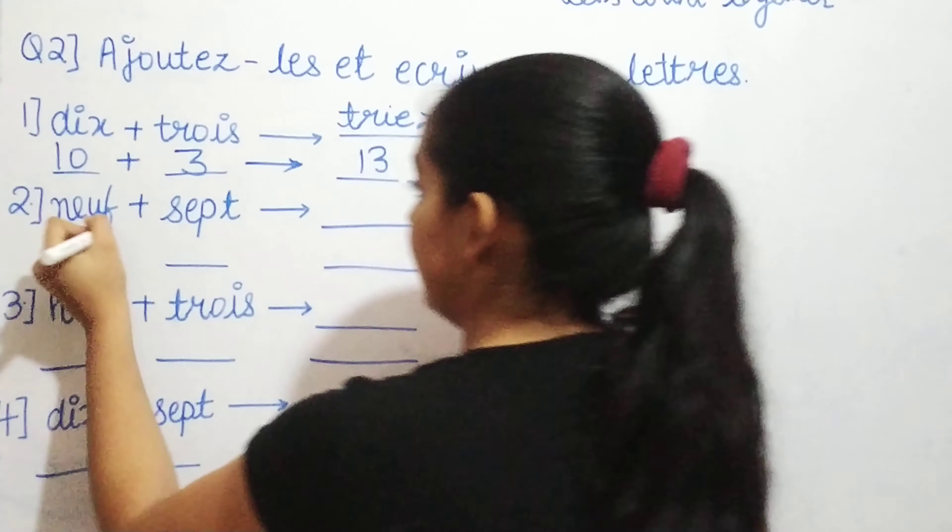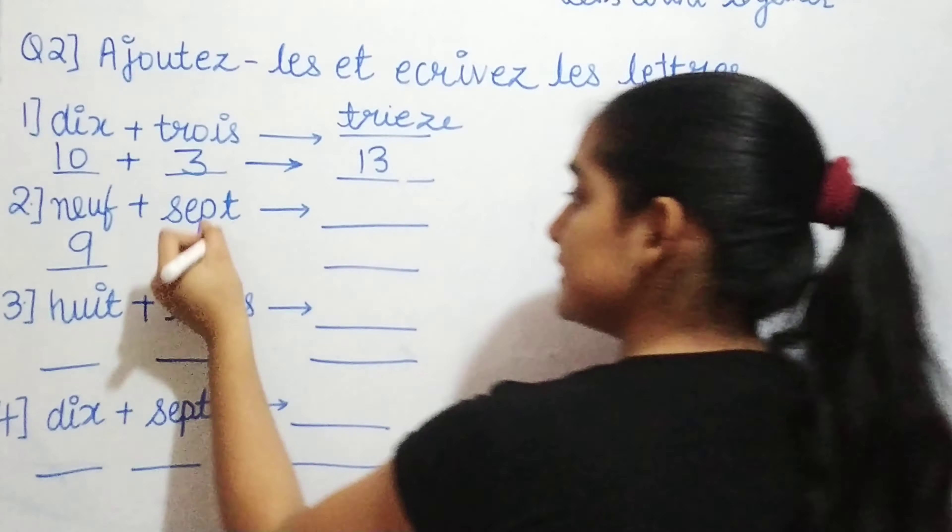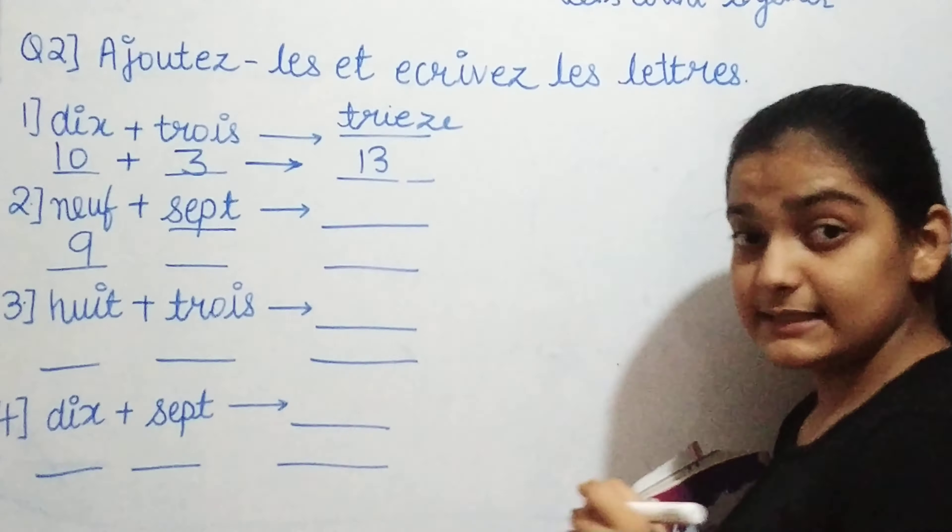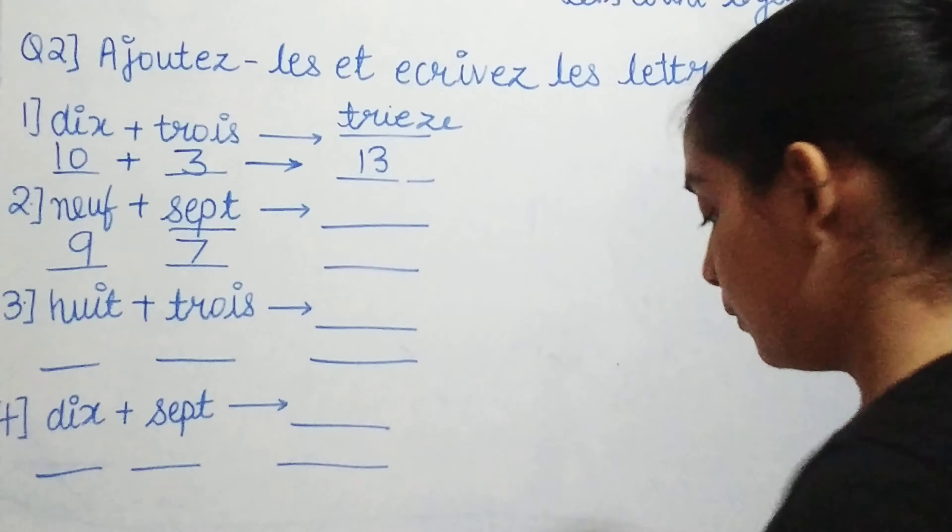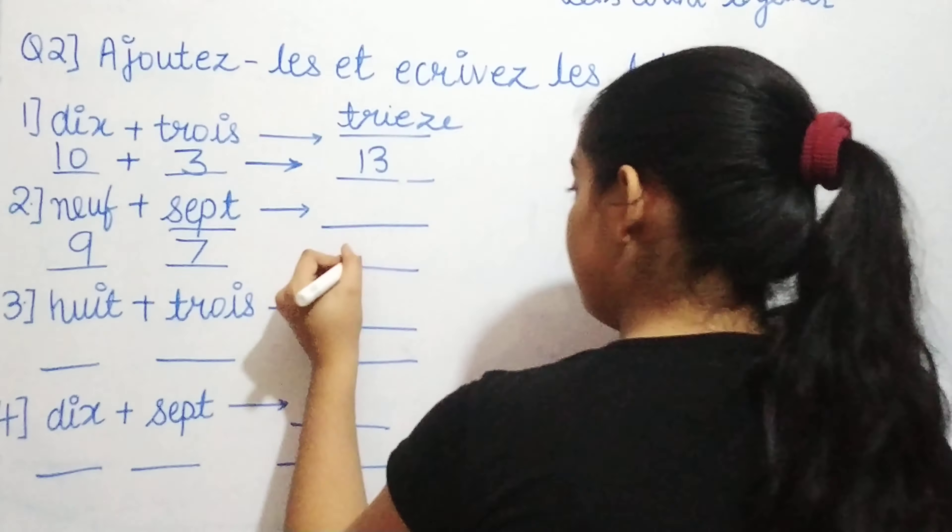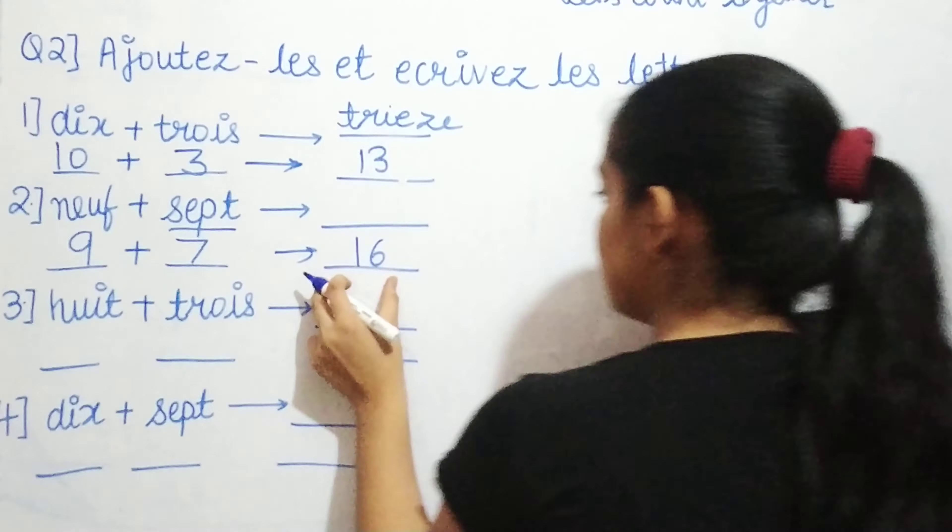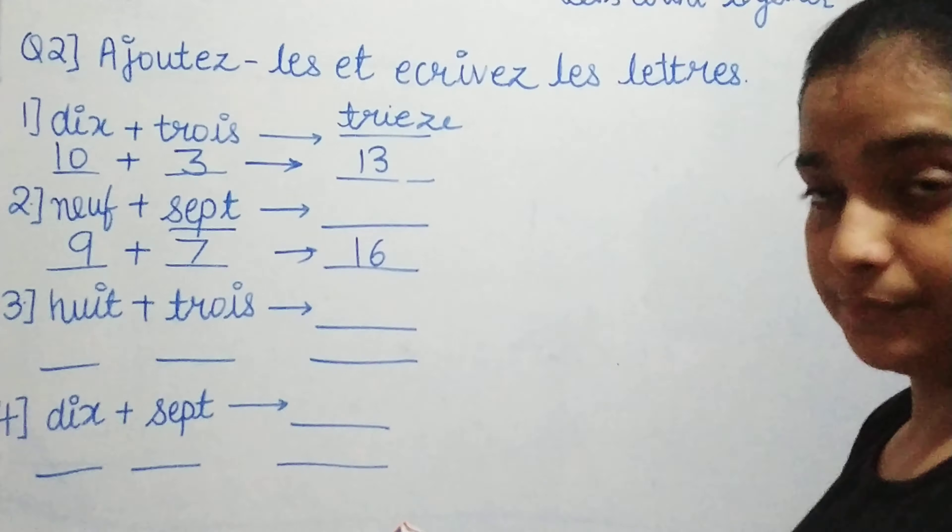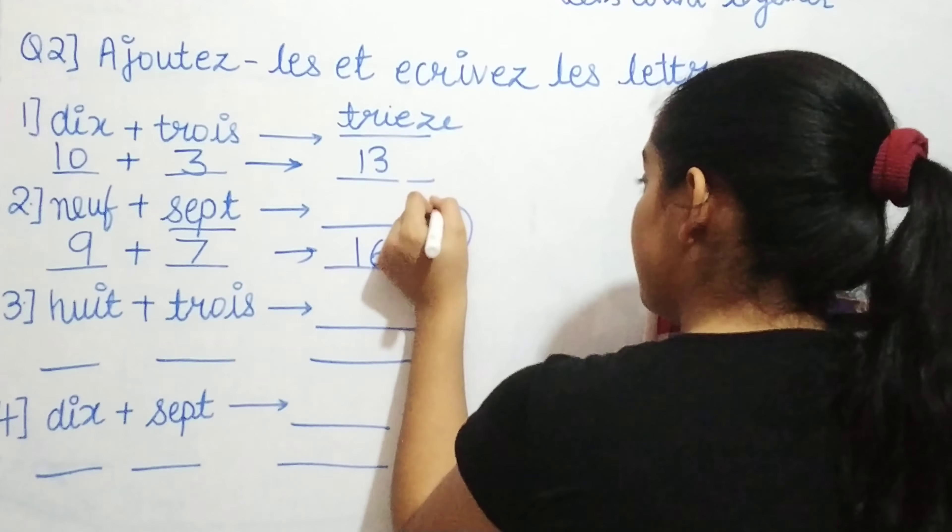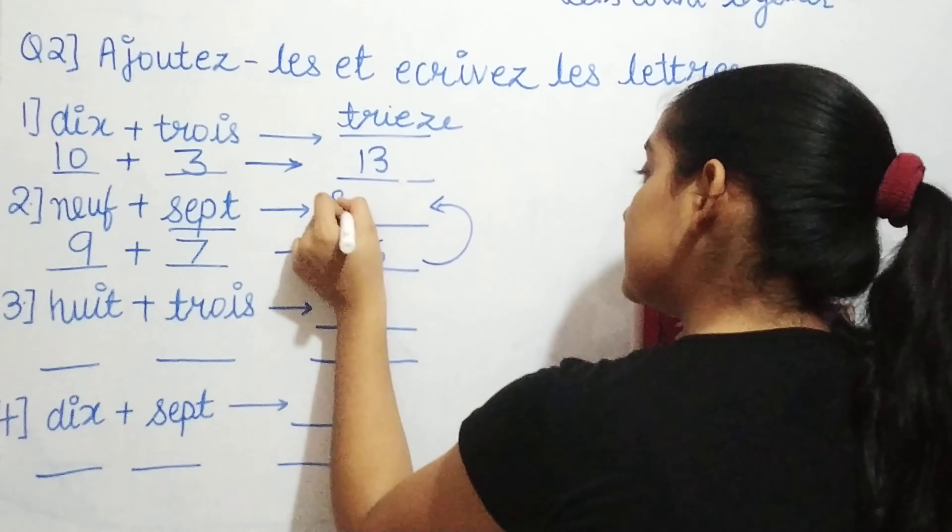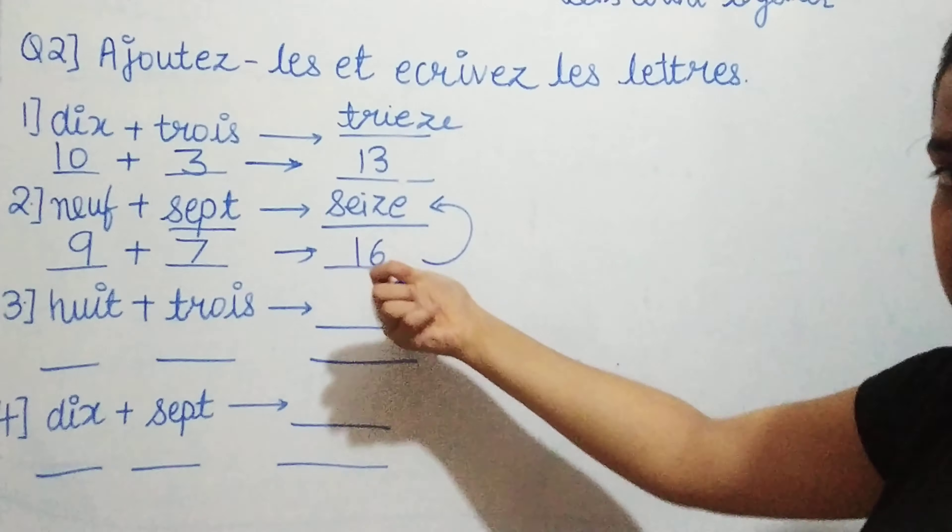Next is neuf. What is this neuf? 9. Next is sept. And what is sept? This is your 7. Now, 9 plus 7 will give you how much? It will give you 16. 9 plus 7 is equal to 16. So now, what do we say 16 in French? We say it as seize.